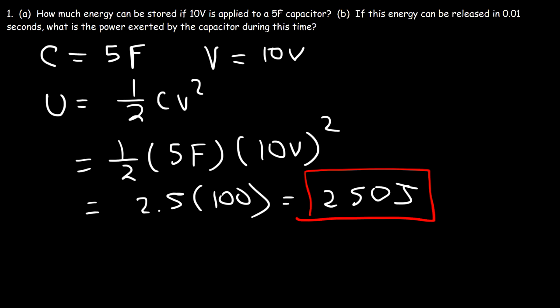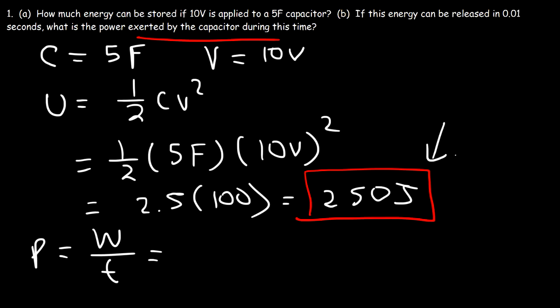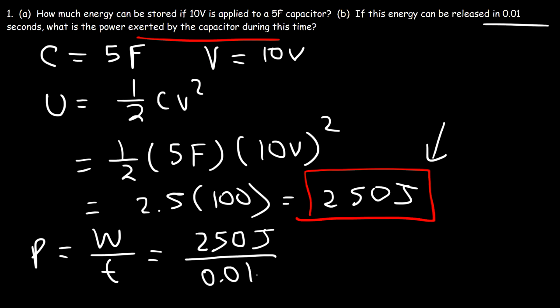Now if this energy can be released in 0.01 seconds, what is the power exerted by the capacitor during this time? Power is the rate at which energy is transferred — it's work divided by time. The work required to charge up this capacitor to 10 volts is 250 joules. So 250 joules divided by 0.01 seconds equals 25,000 watts.